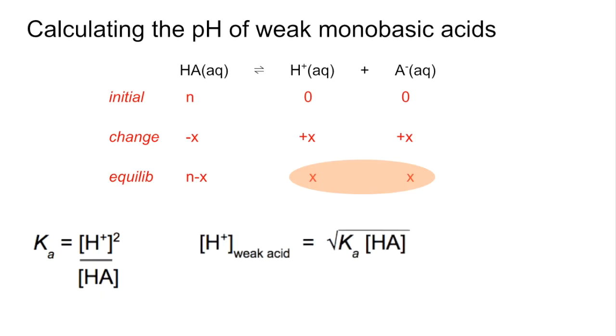And then that's going to rearrange for the H plus of the weak acid. It's going to be equal to the square root of Ka multiplied by the HA concentration. And then obviously we would minus log the H plus concentration to get the pH.